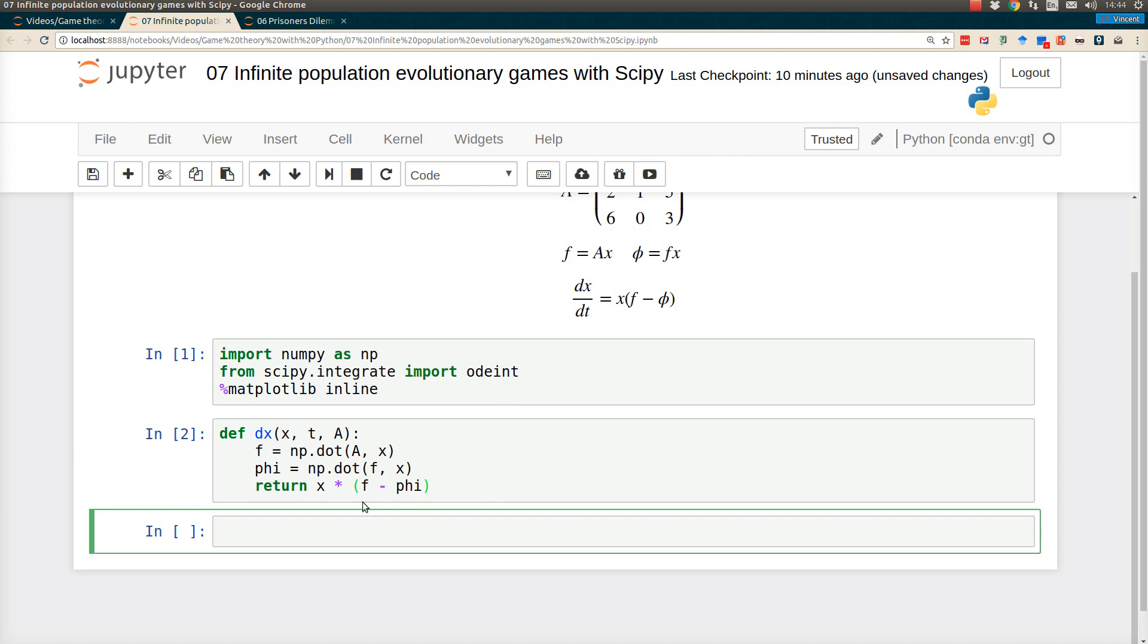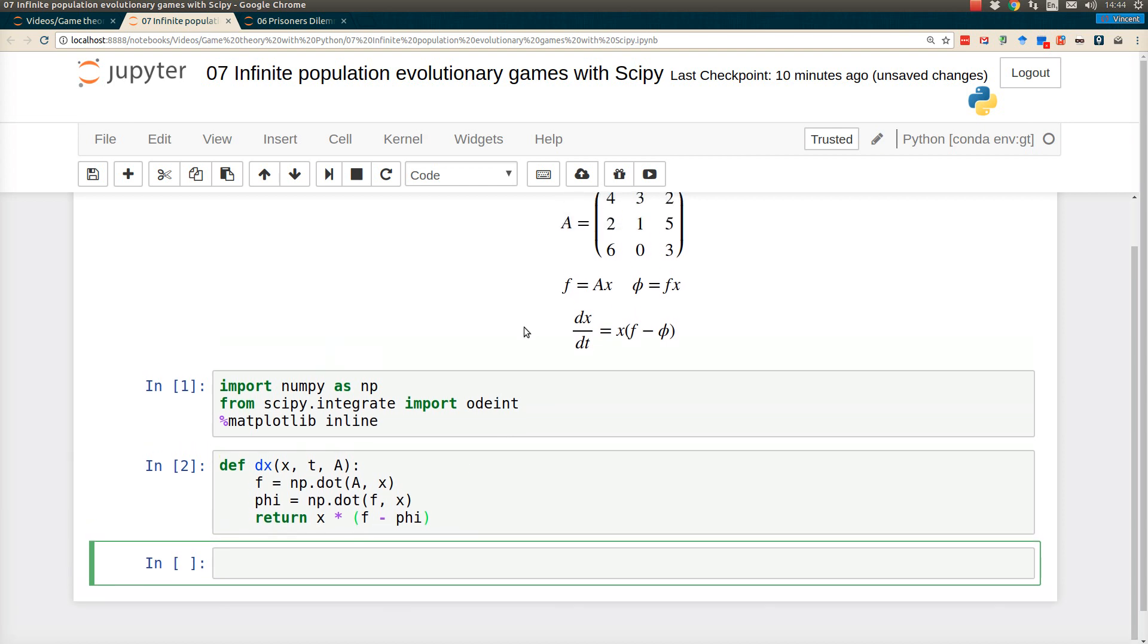Now once I've done that, it's relatively straightforward. Let me define the specific A I've got up there. It's a three by three NumPy array where the first row is four, three, and two; the second is two, one, and five; and the third is six, zero, and three.